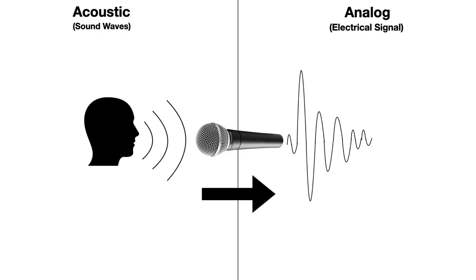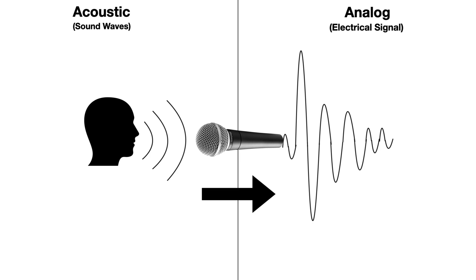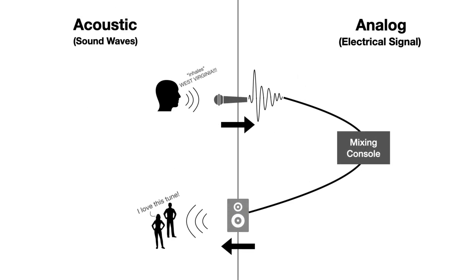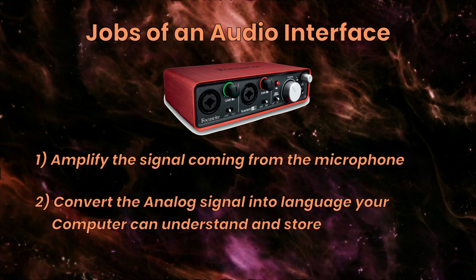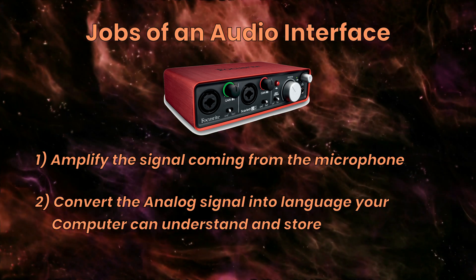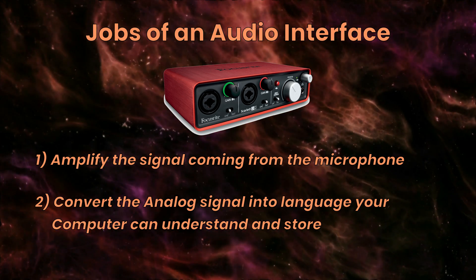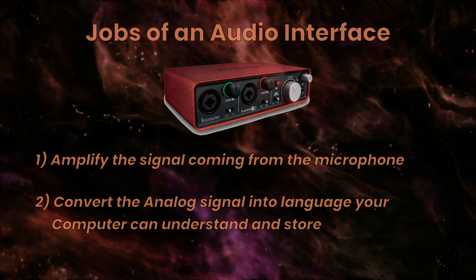Once the mic signal has been amplified, it's ready to be delivered. If you're in a live sound scenario, this means it can be sent back to the speakers so the audience can listen to the sound being performed — the sound is amplified back into the acoustic world where listeners can hear it. However, if we want to store this performance and record it to listen or edit later on, we'll need to use the audio interface's second key function, which converts this analog signal into something that your computer can store.